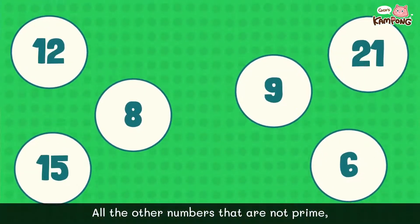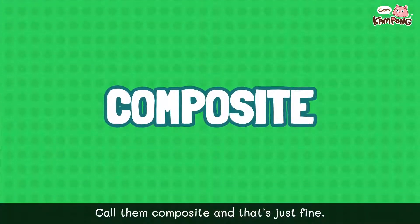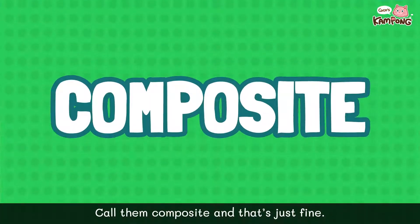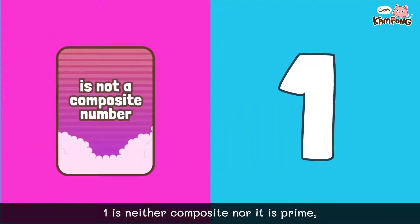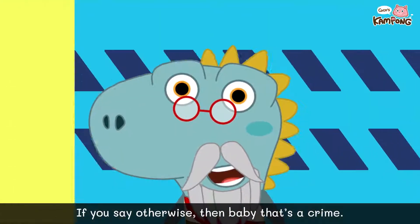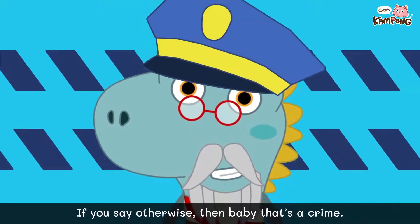All the other numbers that are not prime, call them composite and that's just fine. One is neither composite nor is a prime. If you say otherwise, then baby that's a crime.